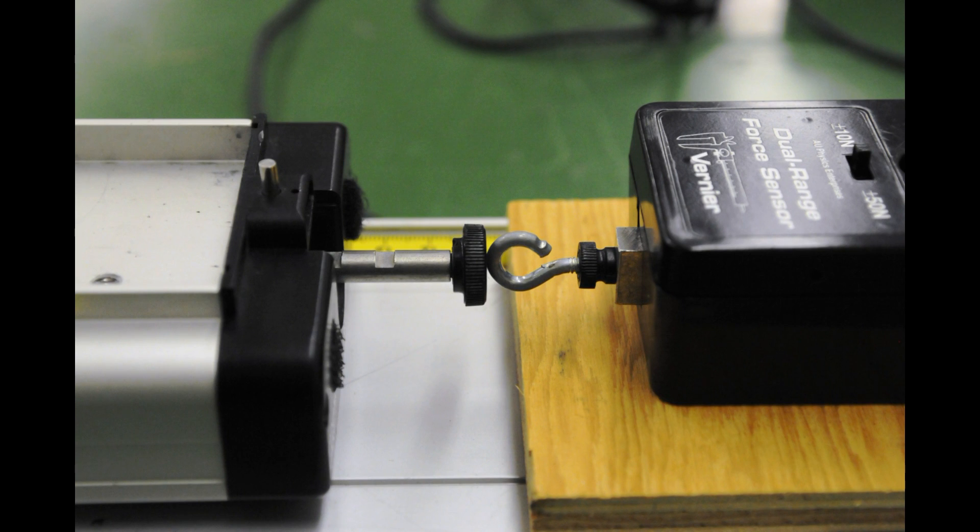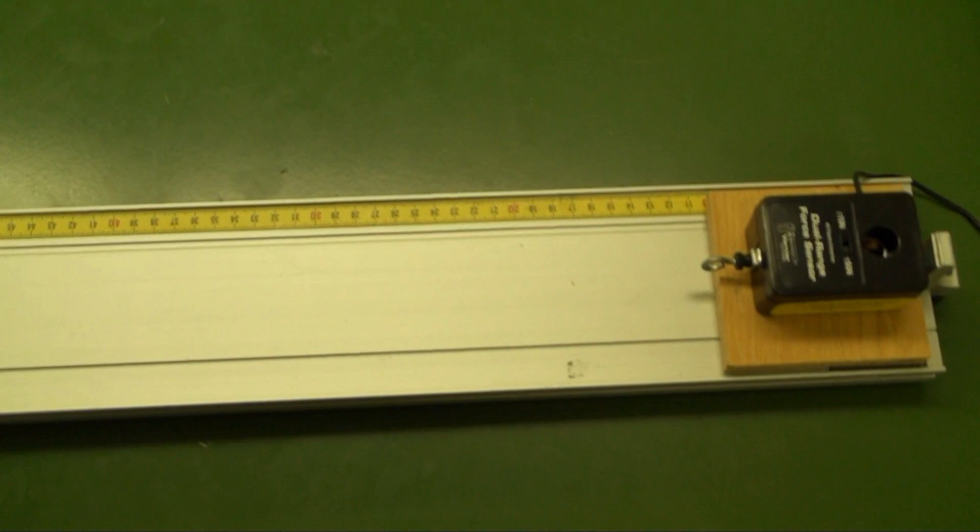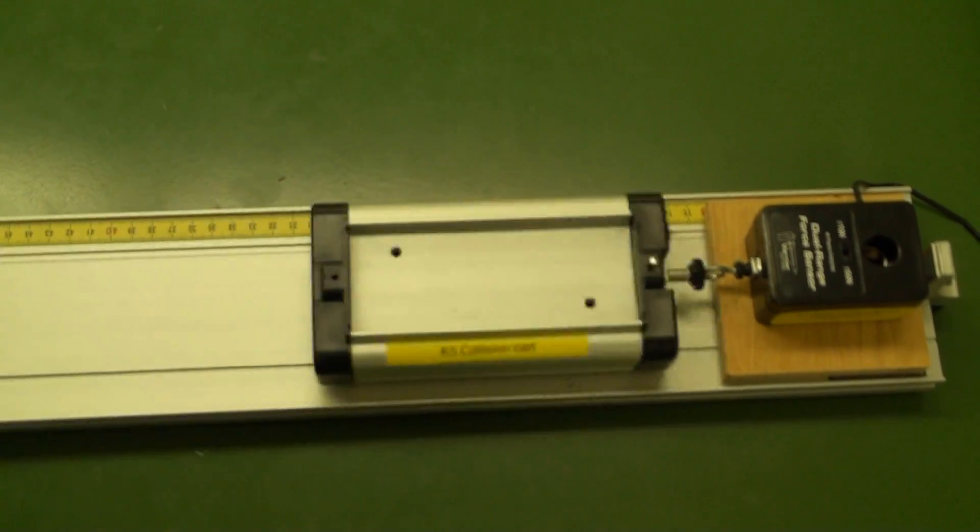Make sure that the plunger on the cart lines up well with the hook on the force sensor. Push the start button on Data Studio and give the cart a shove toward the force sensor and allow the collision to take place.